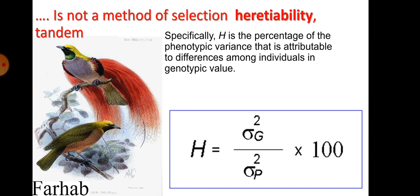Heritability is not a method of selection. Heritability is the percentage of phenotypic variance attributable to genotypic value — specifically, the ratio of phenotypic variance to genotypic value.